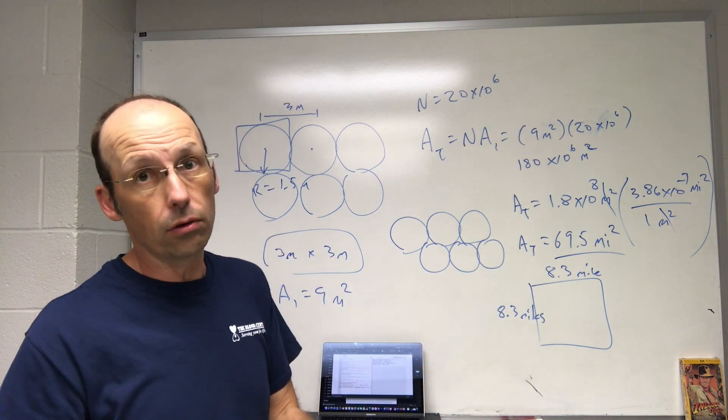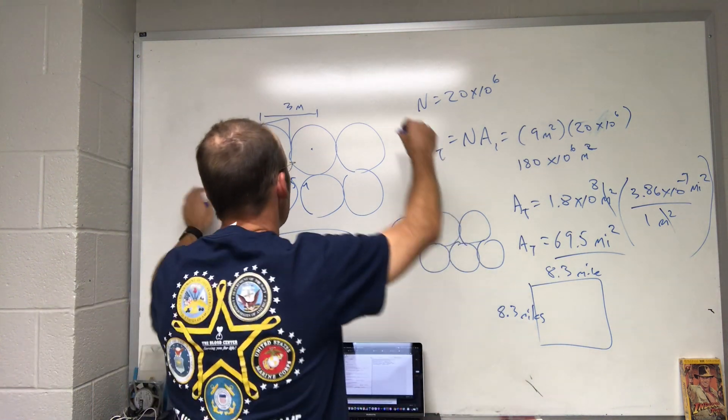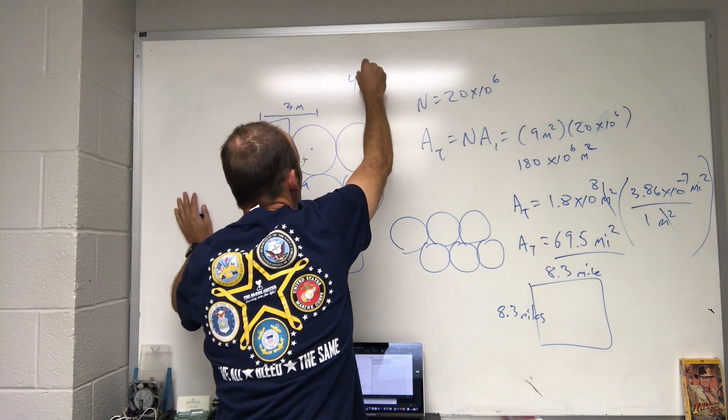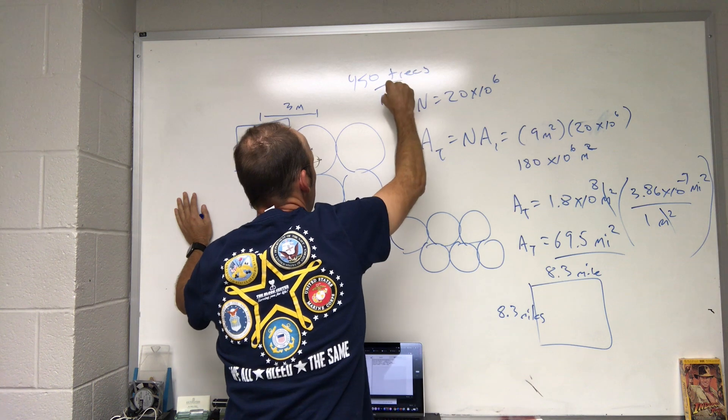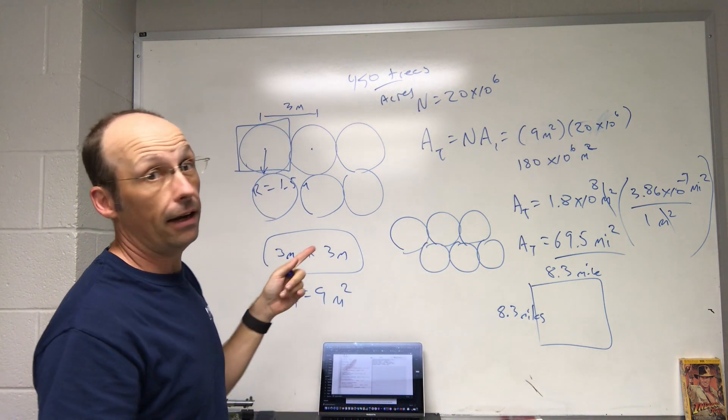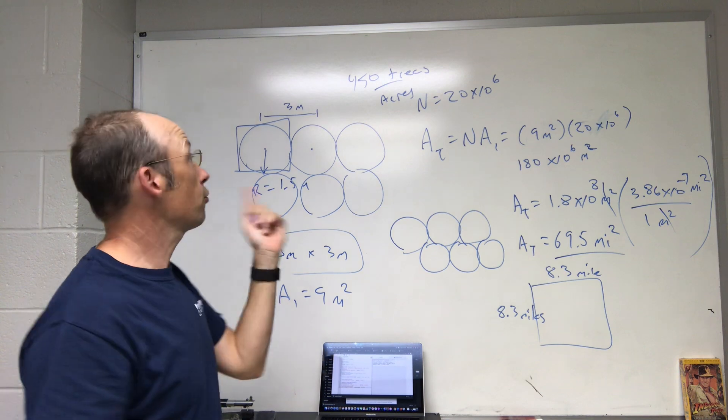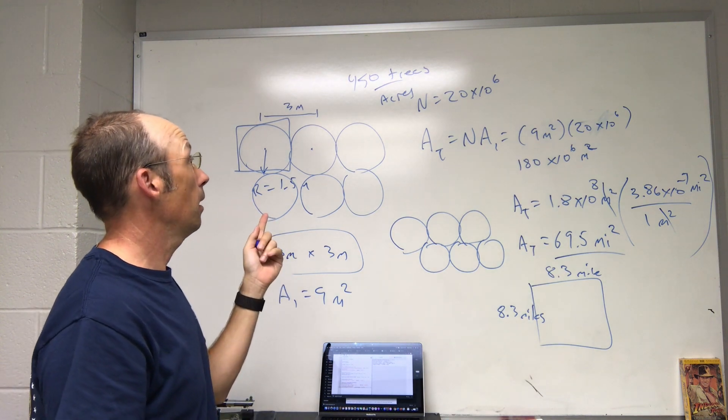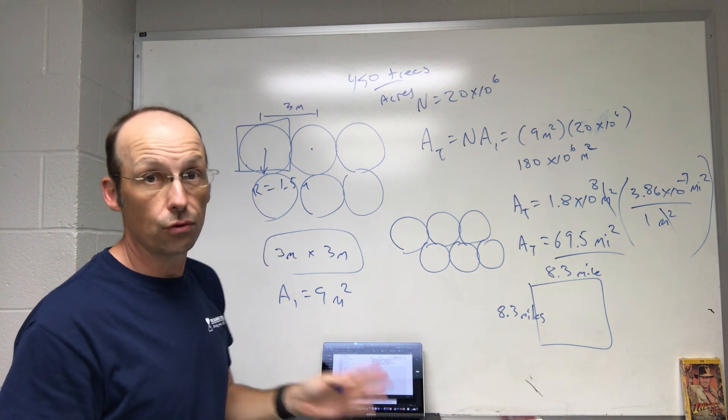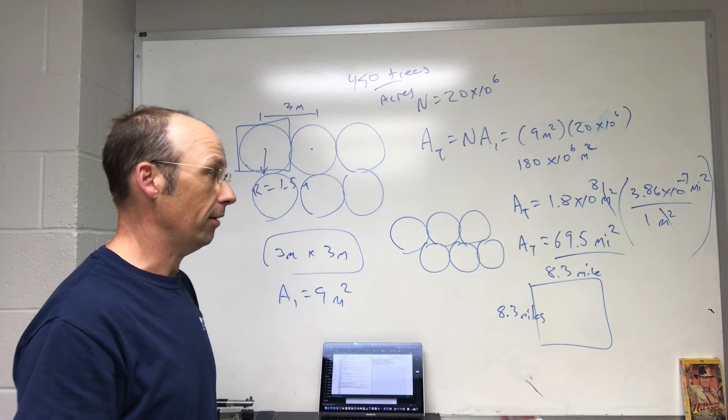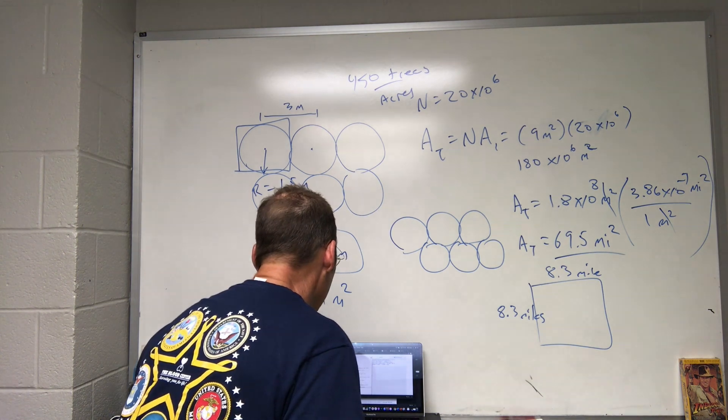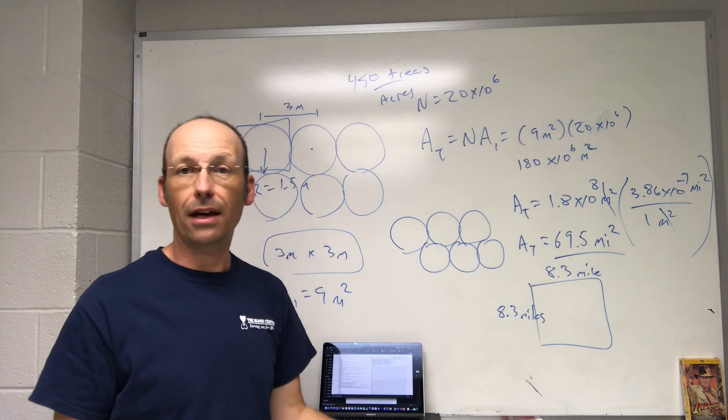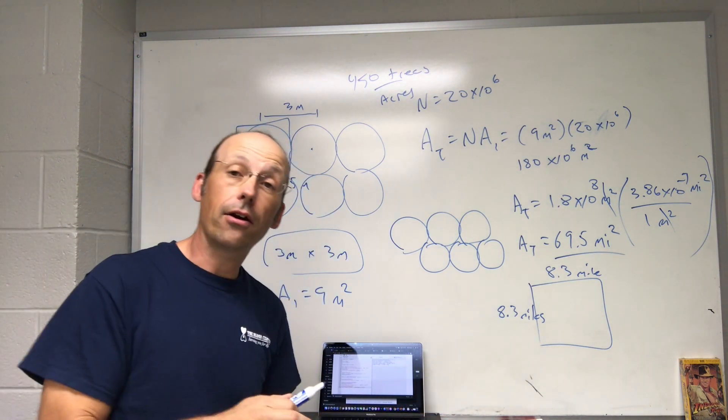Well, I mean, I actually Googled it. The average is about 450 trees per acre. And so, if you convert that to trees per square mile, you do get about that same value. So, that's how you would calculate the area for 20 million trees.